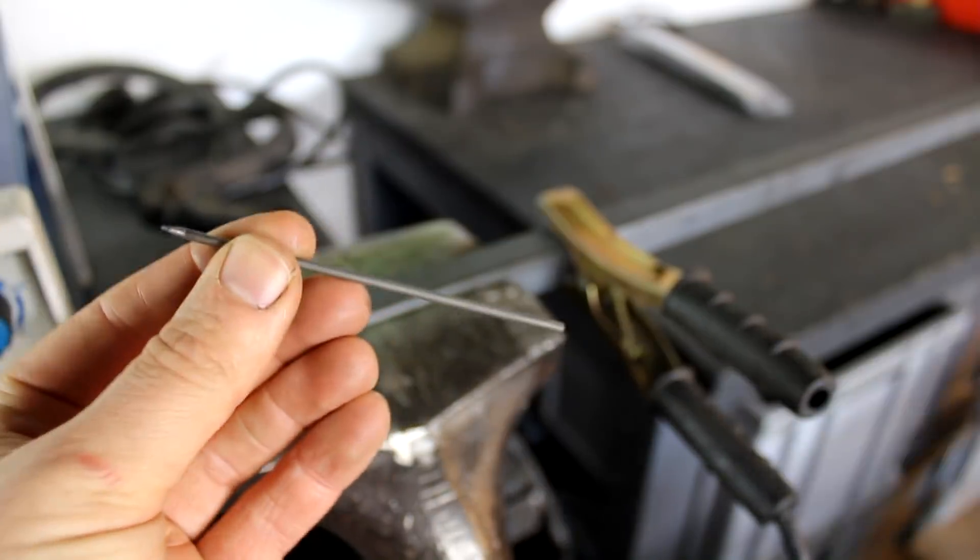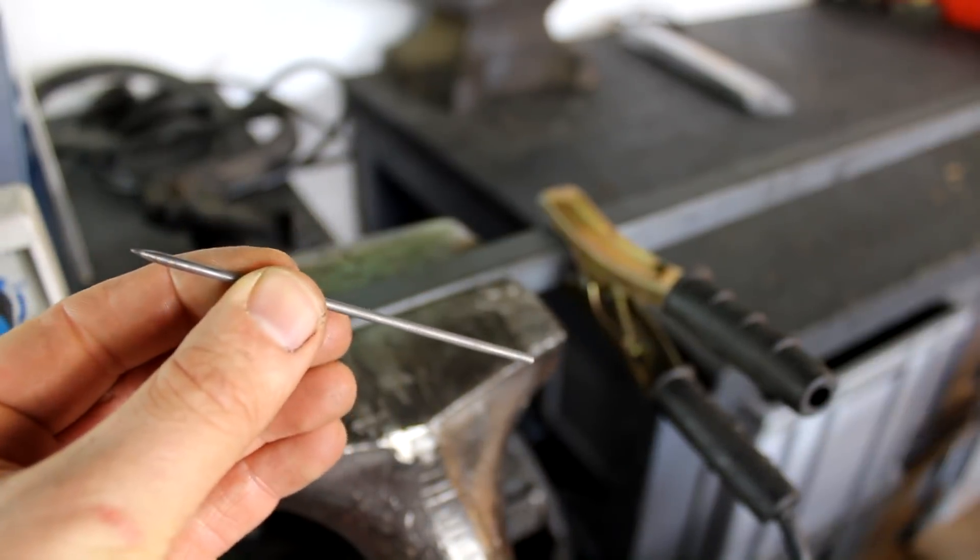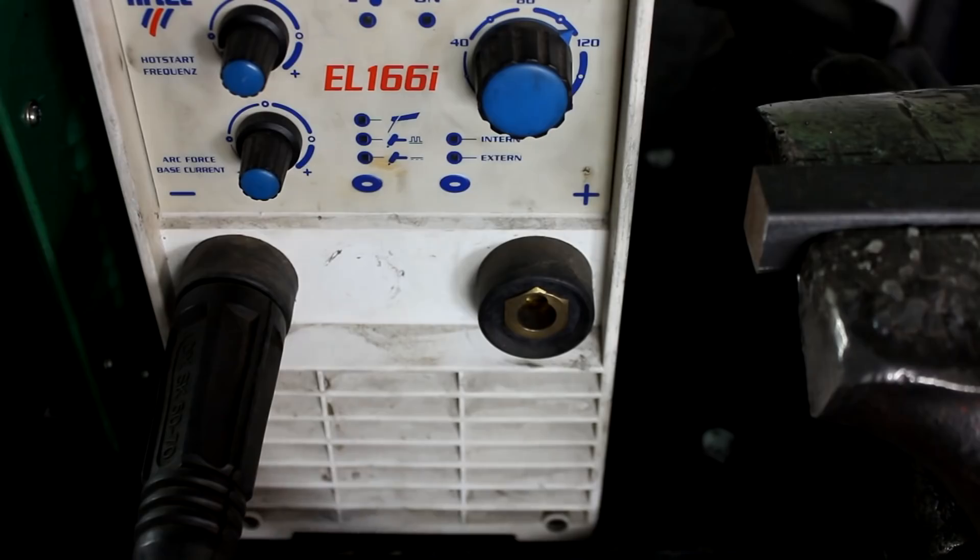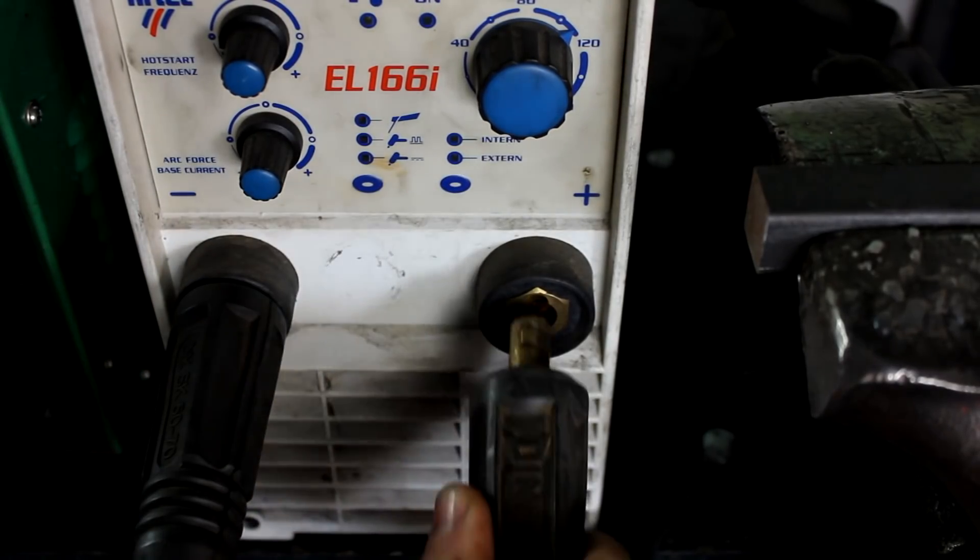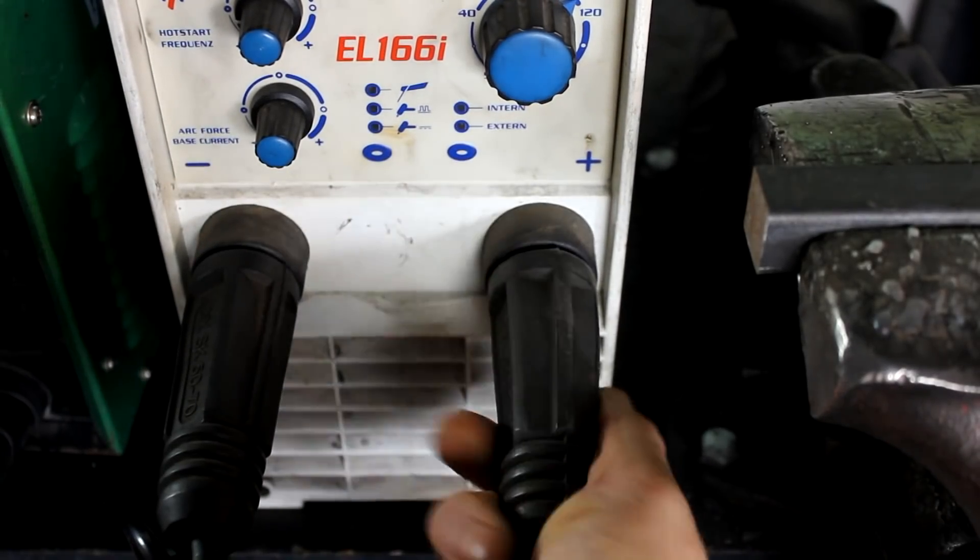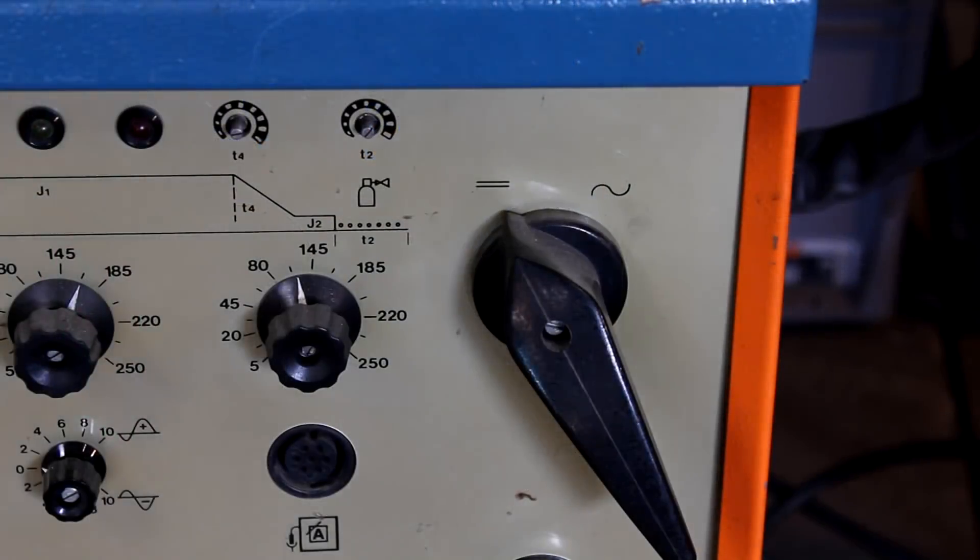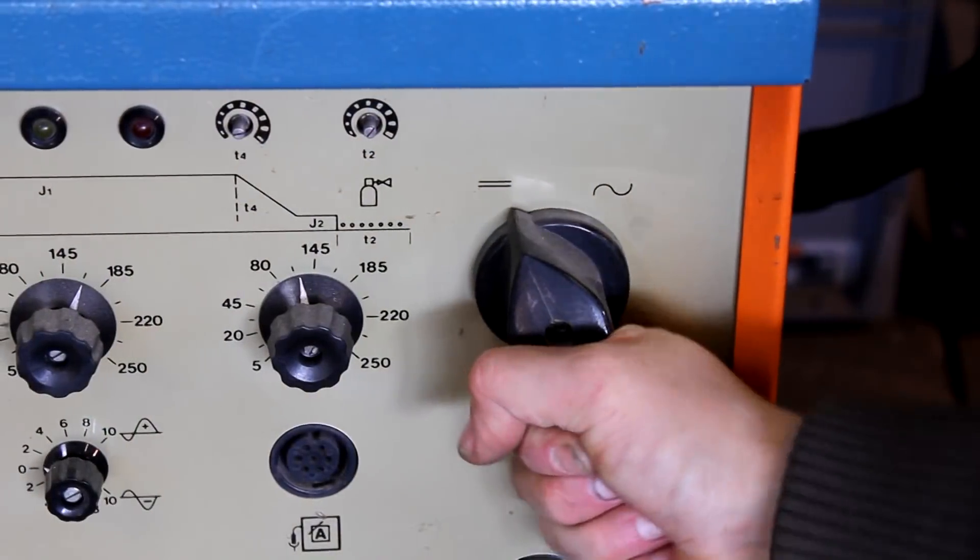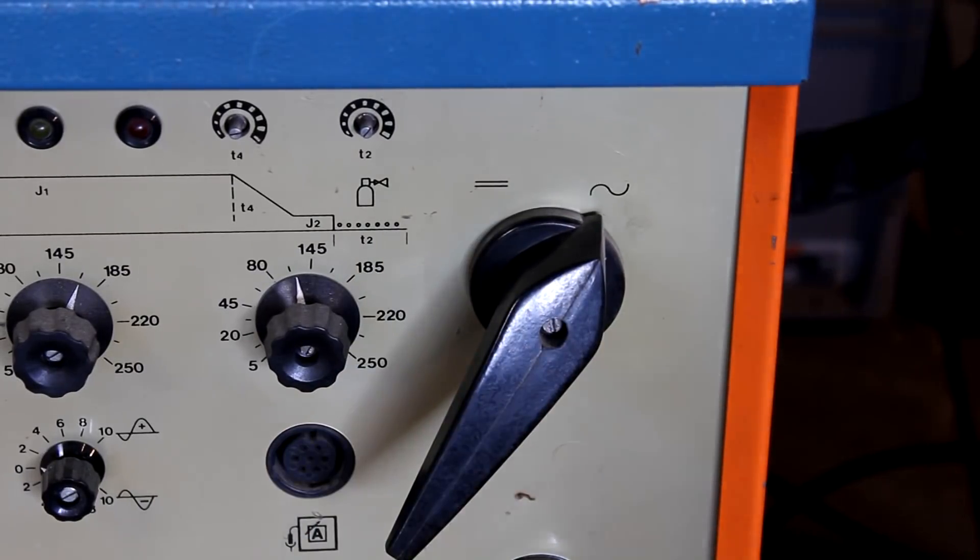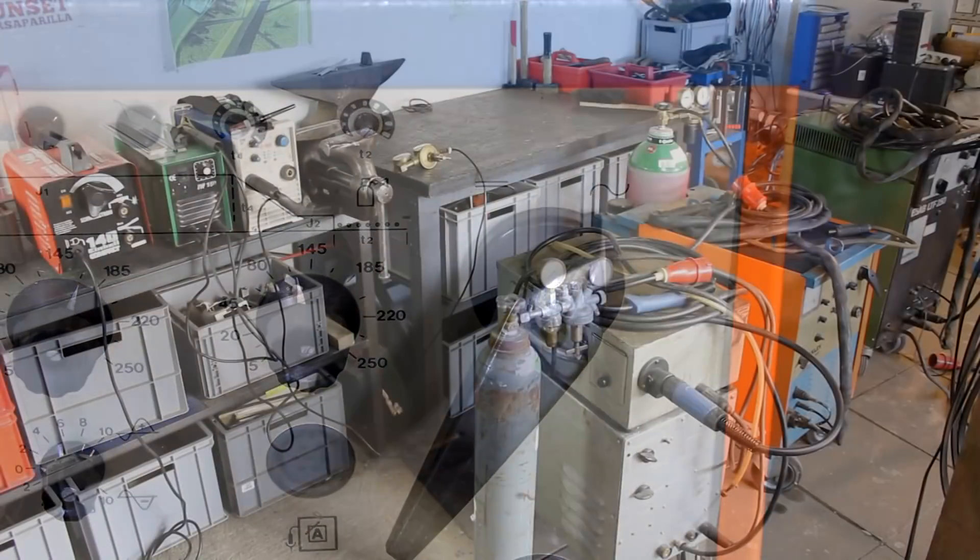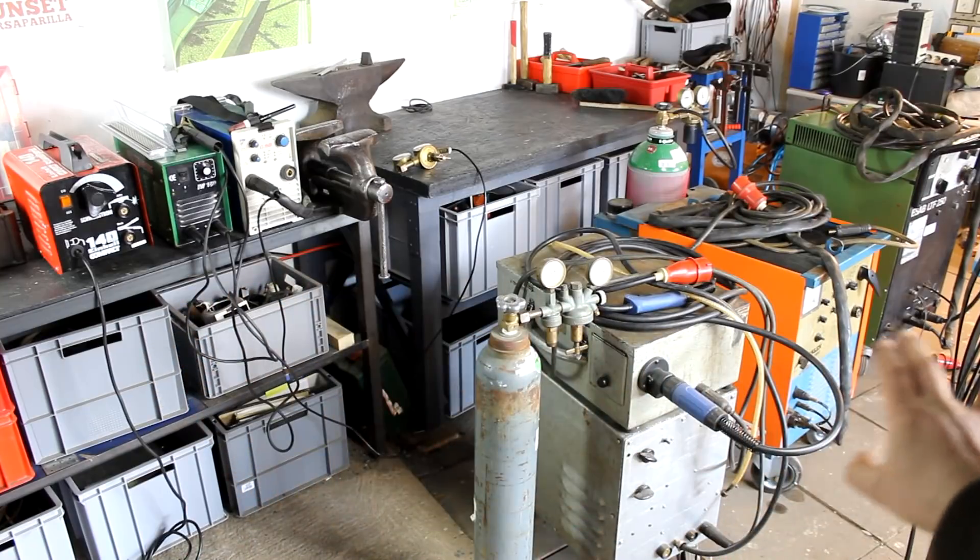And then you also need a power supply, normally a DC power supply, where you now connect the ground clamp to the positive side of the power supply and your welding torch to the negative side. You can also weld with AC, and that is typically used for non-ferrous metals like welding aluminum.